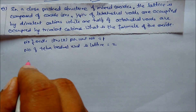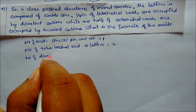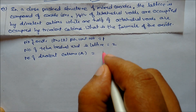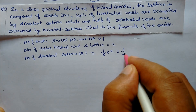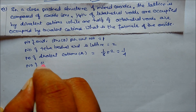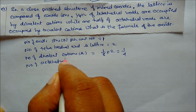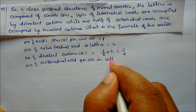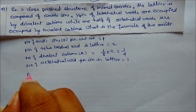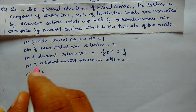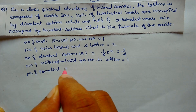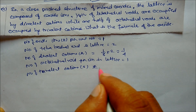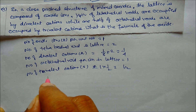The number of tetrahedral voids in the lattice is 2. The number of divalent cations A = 1/8 × 2 = 1/4. The number of octahedral voids per ion in the lattice is 1. The number of trivalent cations B = 1/2 × 1 = 1/2.